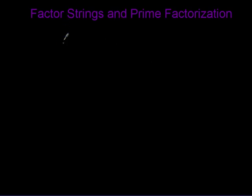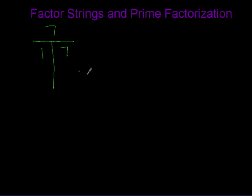This video is going to be about factor strings and prime factorization. Before we get started, I just want to remind you what a prime number is. A prime number is a number that only has two factors — for example, 7. A prime number has only two factors: one and then whatever the number is.